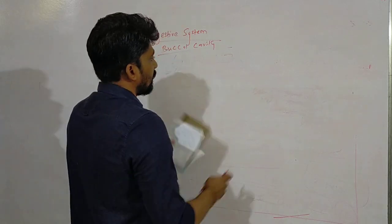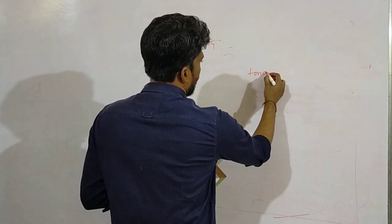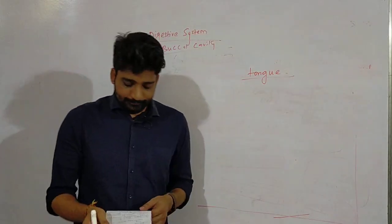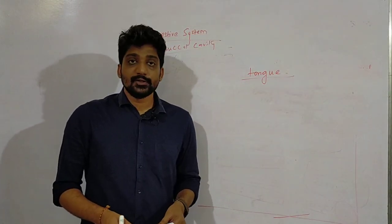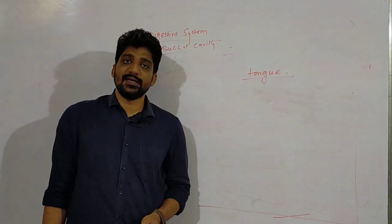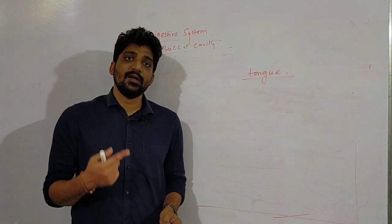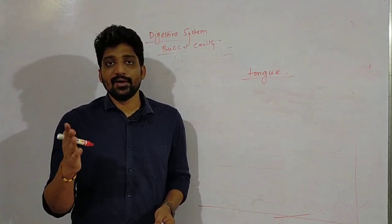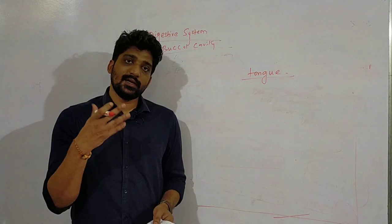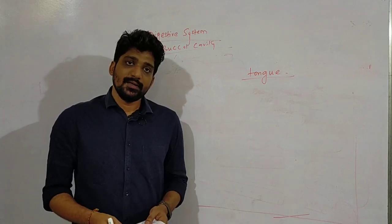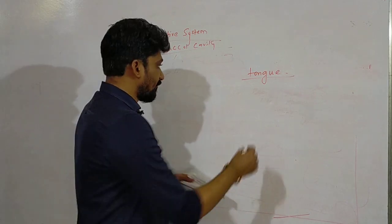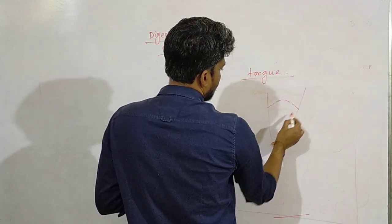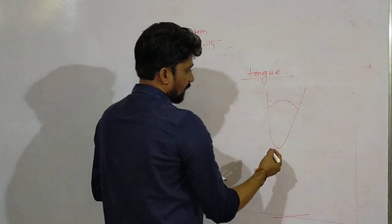Continuing our discussion, today we are going to discuss the next structure of the buccal cavity - tongue. Tongue is made up of skeletal muscle. Skeletal is something which is voluntary in action, smooth is something which is involuntary in action. So tongue which is under our control is made up of skeletal muscle.